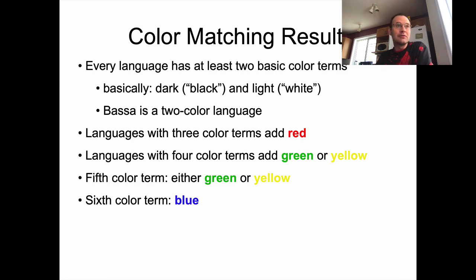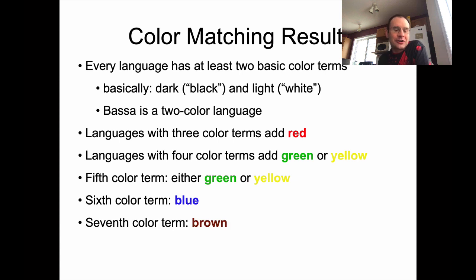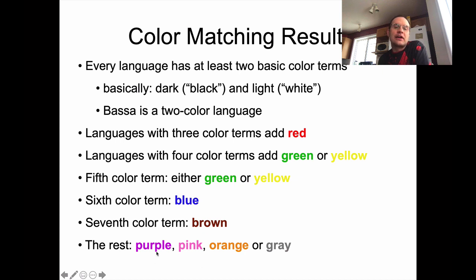I was reading a paper about ancient Greeks — there's a famous passage from ancient Greek literature talking about the 'wine dark sea,' and the reason for that is Greek didn't really have a color term for blue. We normally think of the ocean as blue, but they did not. If you add another color term beyond blue, you get brown, then others like purple, pink, orange, and gray. The first seven in the hierarchy are fairly consistent cross-linguistically.